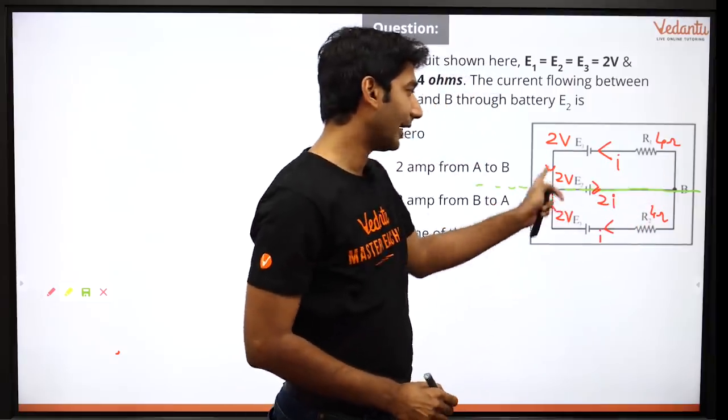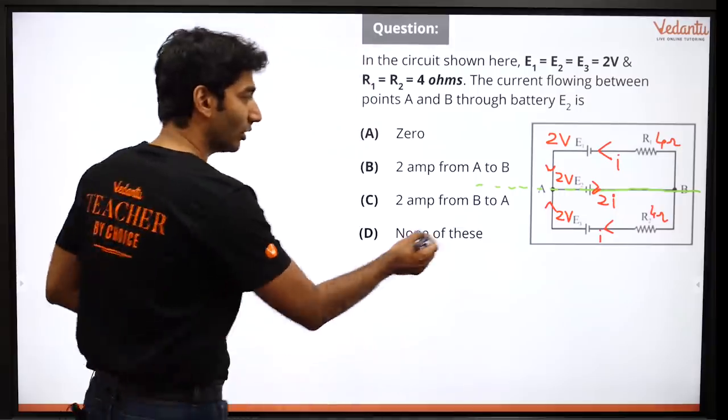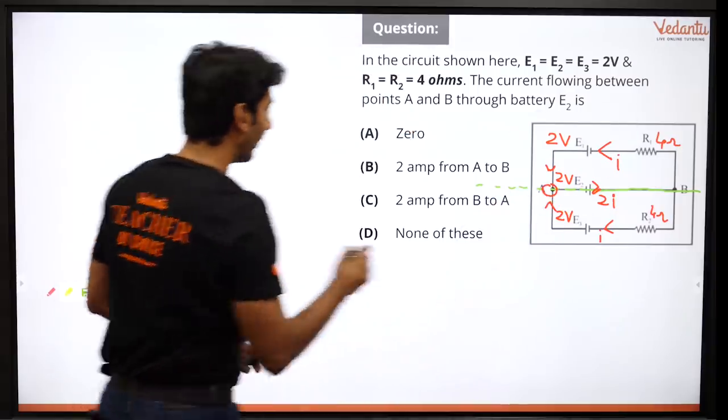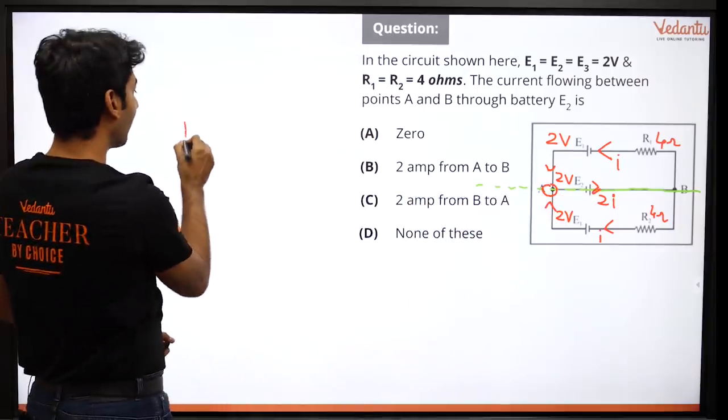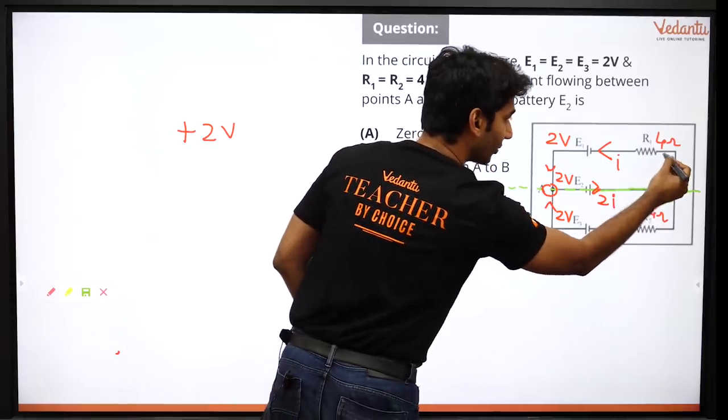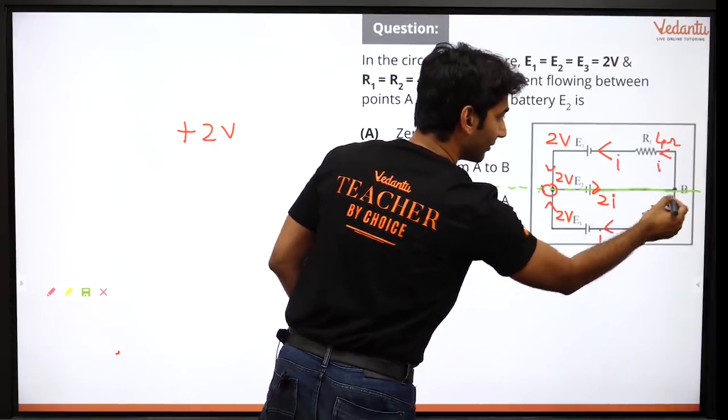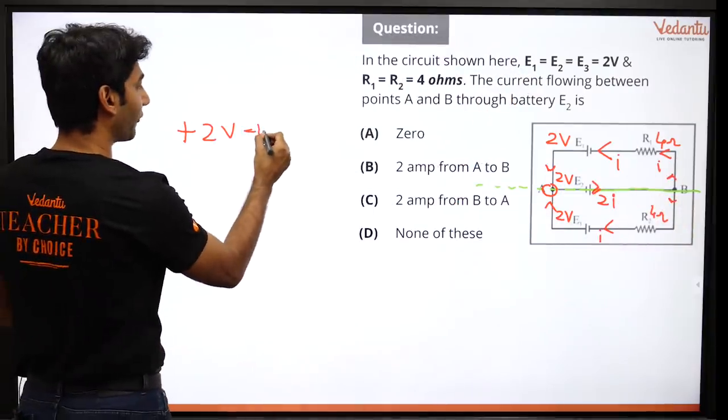So this is 2i from here i. This we can simply solve in one loop, this equation. From here I start and we rotate in one loop, so from here we go, so it becomes plus 2 volts potential rise. Then from here we will go, so from here how much current is going, i from here i from here i, so from this side potential drop is minus 4i.